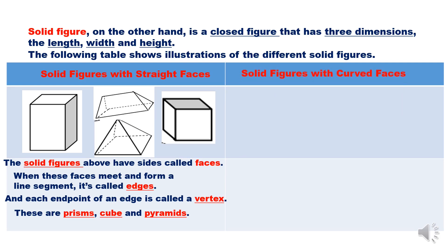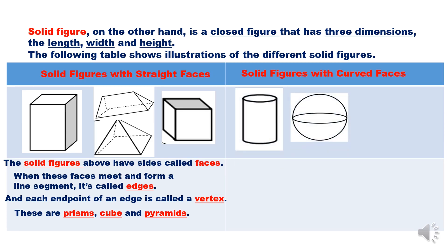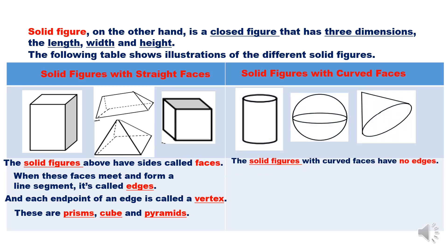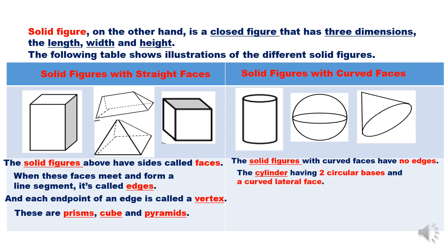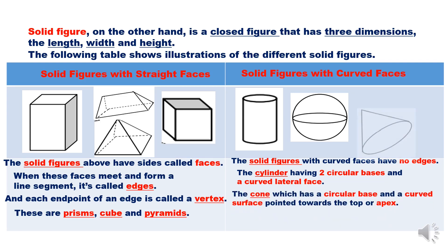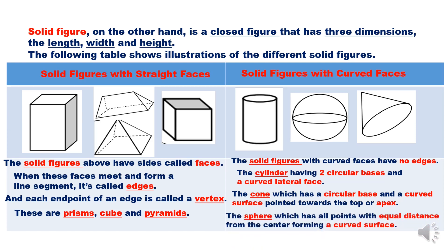Solid figures with curved faces have no edges. The cylinder has two circular bases and a curved lateral face. A cone has a circular base and a curved surface pointed toward the top, or apex. The sphere has all points at equal distance from the center, forming a curved surface.